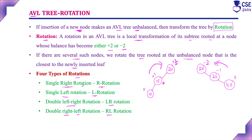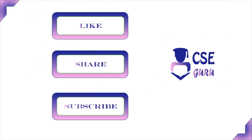To summarize: one is single right rotation or RR rotation, two is single left rotation or LL rotation, three is double left-right rotation or LR rotation, four is double right-left rotation or RL rotation. All these four types of rotations in AVL tree will be discussed in detail with examples. Thank you for watching this video.